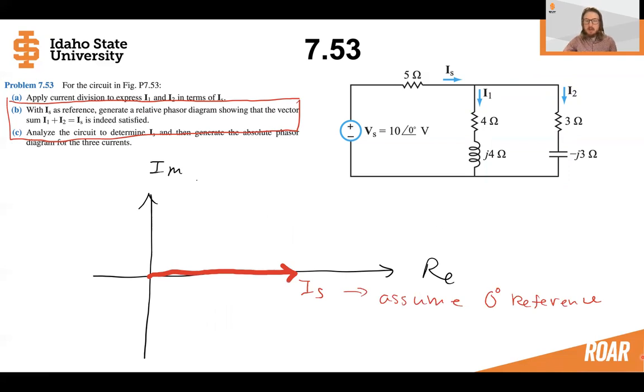Because we're assuming IS has a zero degree reference, I've drawn that completely along the real axis. If it had any imaginary component, this would add an angle to it, but we know it doesn't. So I've drawn IS here.